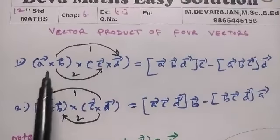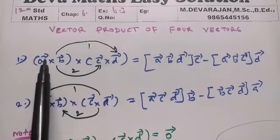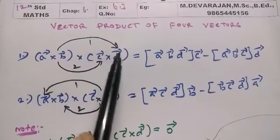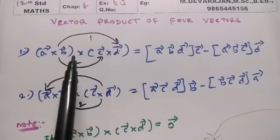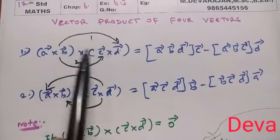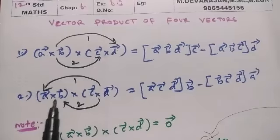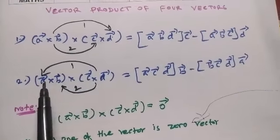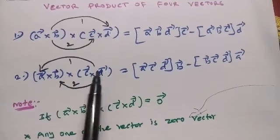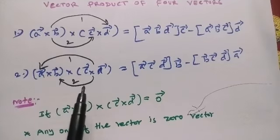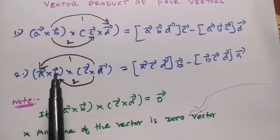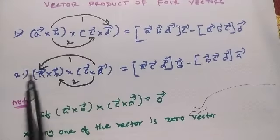Next, vector product of 4 vectors: A x B x C x D equals box A, B, D, C vector minus box A vector, B vector, C vector, D vector. This is a vector: box A vector, C vector, D vector, B vector minus box B vector, C vector, D vector, A vector.